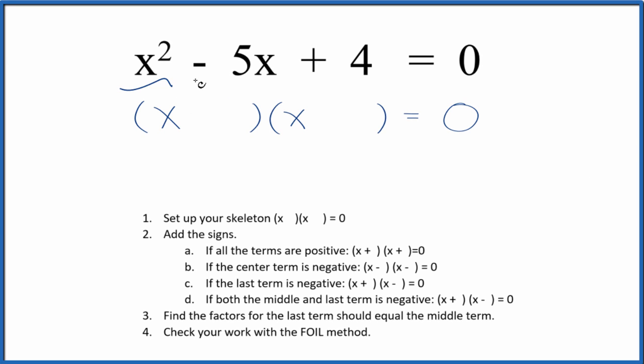Let's factor the equation x squared minus 5x plus 4. We'll use these guidelines, these steps here to help us do that. The first thing we do is set up a skeleton equation. I've already done that here.